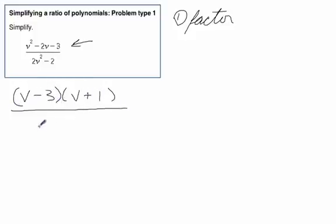And then in the denominator, we notice we have a common factor of 2. And that would be v squared minus 1. Then we notice this is a difference of squares. So, v minus 3 over times v plus 1.